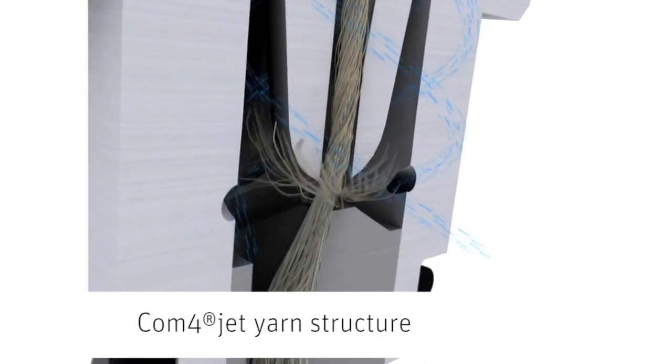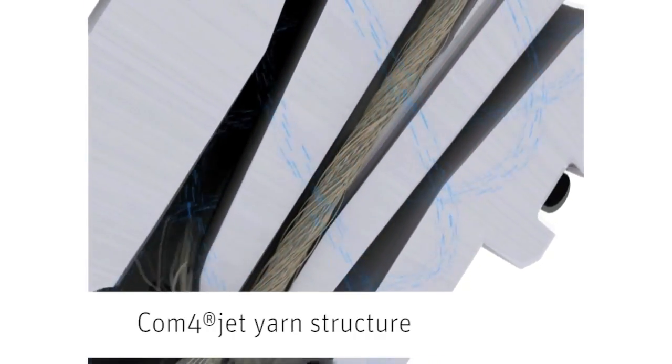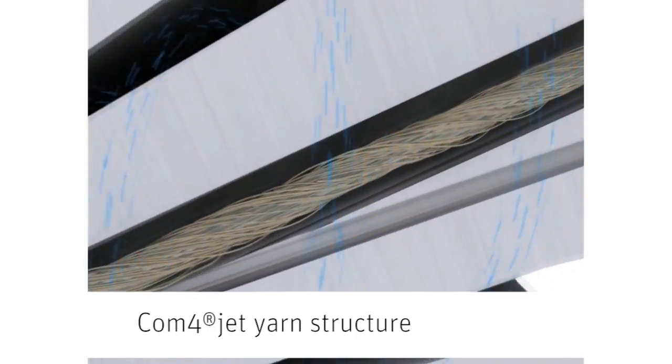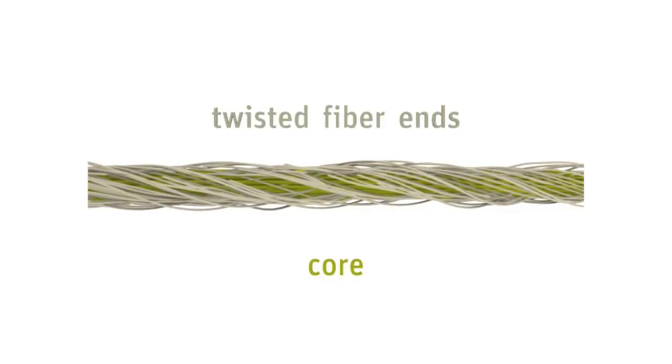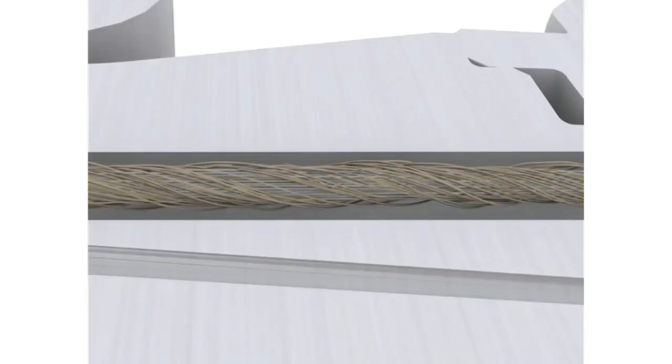The ComfortJet yarn structure shows parallel fiber mass forming the core of the yarn and the fiber ends twisted around the core. The yarn surface is smooth and even and shows a low value of yarn hairiness.